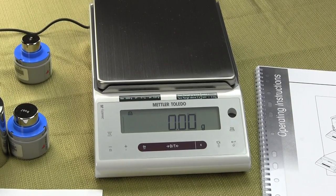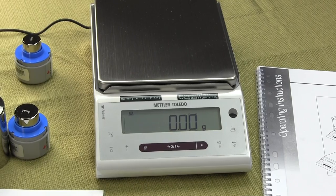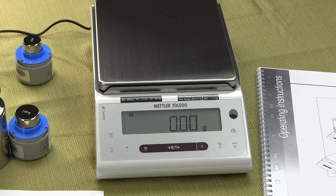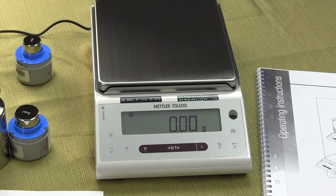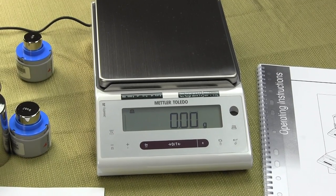Welcome to Precision. Today we're going to show you the Mettler Toledo. This is the new JS series. This is a JS6002G Slash A.